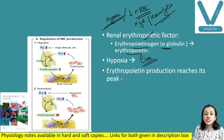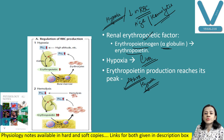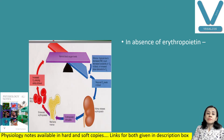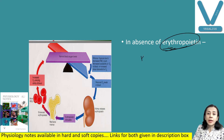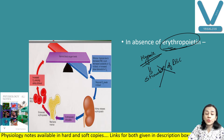Erythropoietin production reaches its peak within 24 hours after hypoxic stimulation. So when ascending to high altitude, after 24 hours erythropoietin production is at its peak. In the absence of erythropoietin — for example if the kidneys are removed — even if hypoxia occurs, there is no stimulation of RBC production. Therefore, erythropoietin is essential to increase RBC production in response to hypoxia.